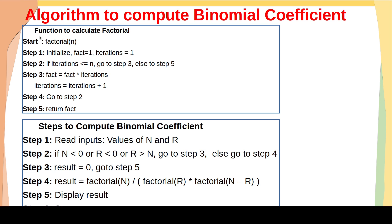This is the algorithm to compute binomial coefficient. We have already seen the function to calculate factorial. In step 1, we read the inputs n and r. In step 2, we check some conditions: if n is less than 0, or r is less than 0, or r is greater than n, then we go to step 3, because in these cases the binomial coefficient will be either 0 or will not exist.